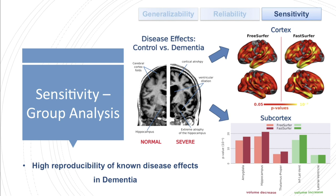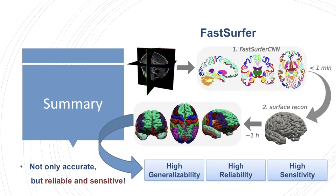In total, we are able to robustly reproduce known disease effects in dementia patients. Overall, we could show that FastSurfer is not only an accurate tool, but also reliable, sensitive, and generalizes well to unseen cases, and is as such, hopefully, of use to many of you.